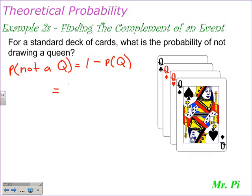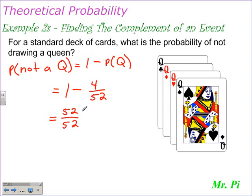We can rewrite that as 1 minus the probability of drawing a queen. There are 4 queens in the deck as our favorable outcome, and there are 52 cards in the deck as the total number of outcomes. If you need to, you can write this as 52 over 52 — that would be rewriting 1 as the fraction 52 over 52. From that, we need to subtract 4 over 52, and that becomes 48 over 52.